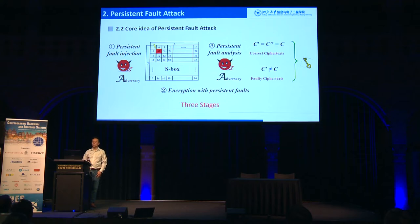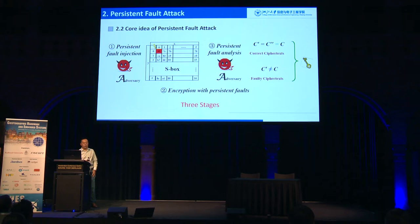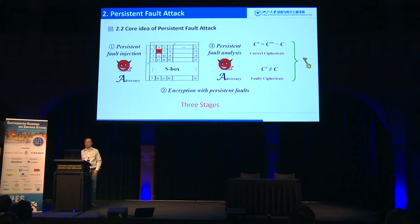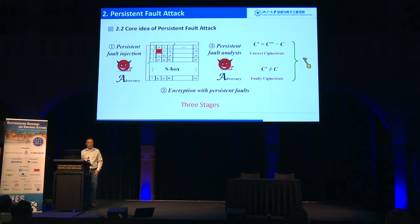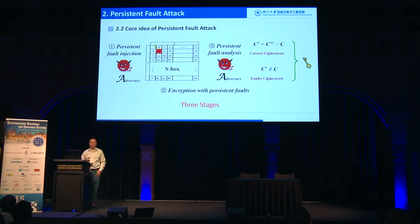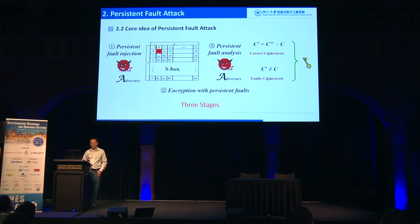The core idea of the persistent fault attack is that instead of using the previous tightly coupled fault injections, we separate it into two stages: a loosely coupled fault injection stage followed by a subsequent analysis stage — so totally three stages. The persistent fault is injected into the lookup tables. However, the faulty element may not be accessed during every encryption, so some ciphertexts will be correct and some incorrect. Both types of ciphertexts can be used for analysis, and we do not require the same plaintext to be encrypted twice. This attack is designed to defeat some countermeasures.